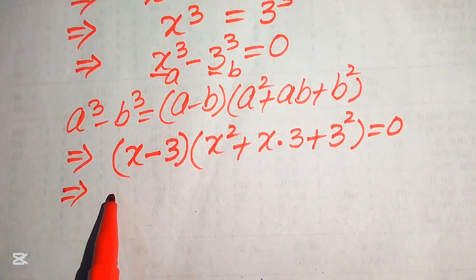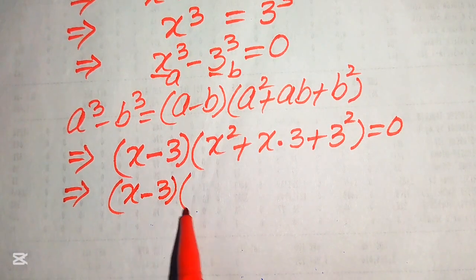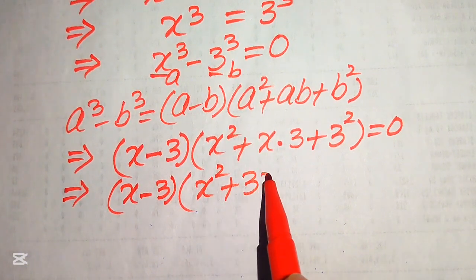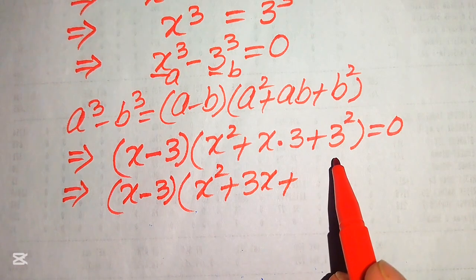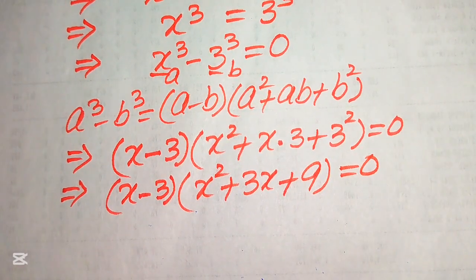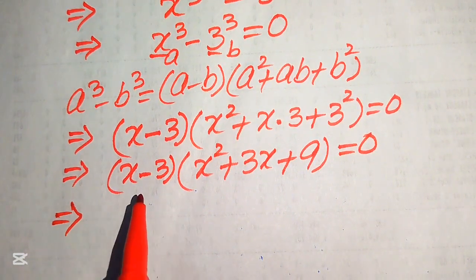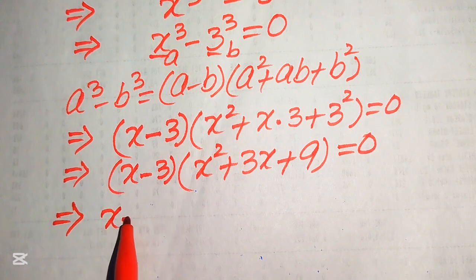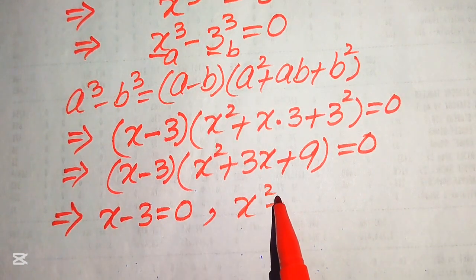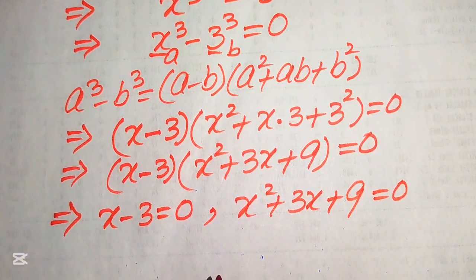After simplification this becomes (x minus 3) times (x² plus 3x plus 9) equals 0. We now divide this into two cases: Case 1 is x minus 3 equals 0, and Case 2 is x² plus 3x plus 9 equals 0.